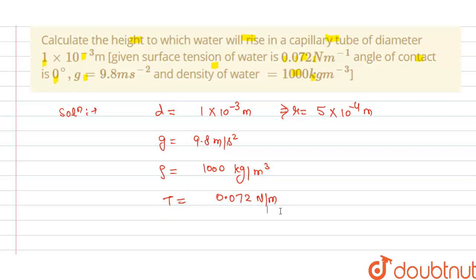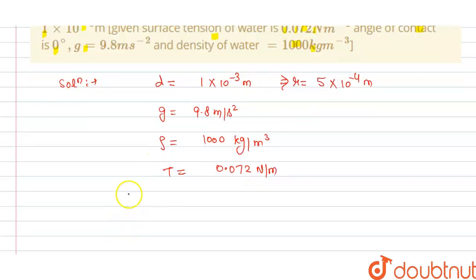So we have to find the height of capillary rise H. We have height H is equal to 2T cos θ divided by R, ρ, and g. And we have θ is 0 degrees.